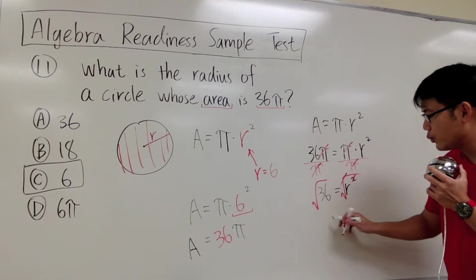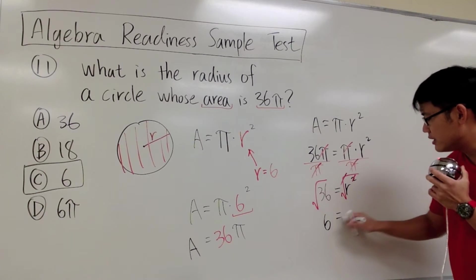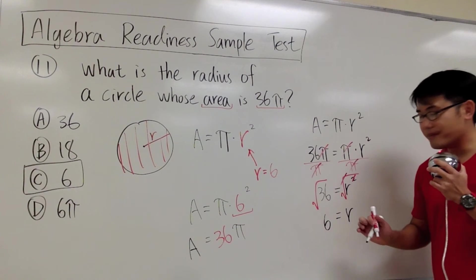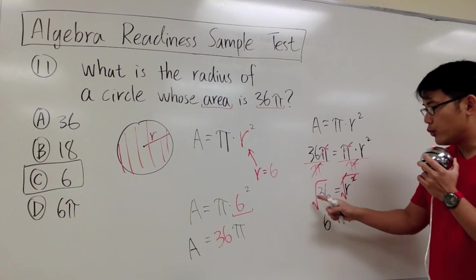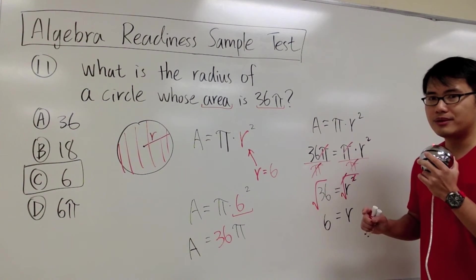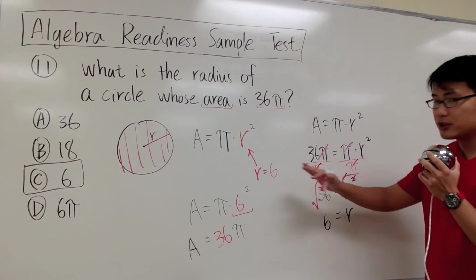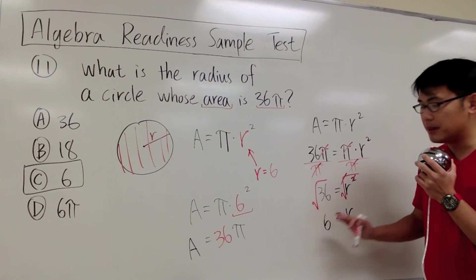And then square root 36, we know that will be 6. And then you see, 6 = r. And then usually, when we square root both sides, we will put a plus minus to a number. But in this case, we're talking about geometry, so we just keep the positive number.